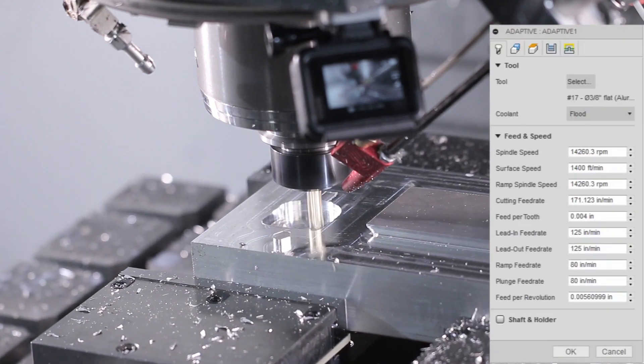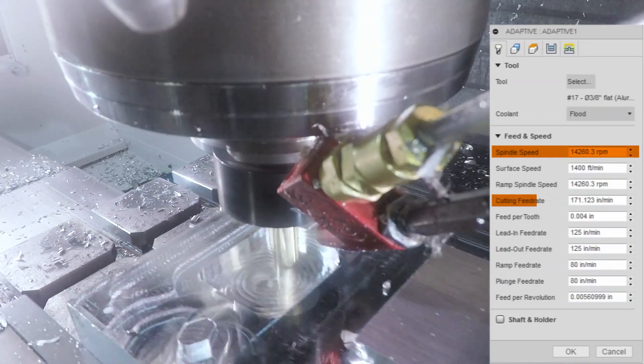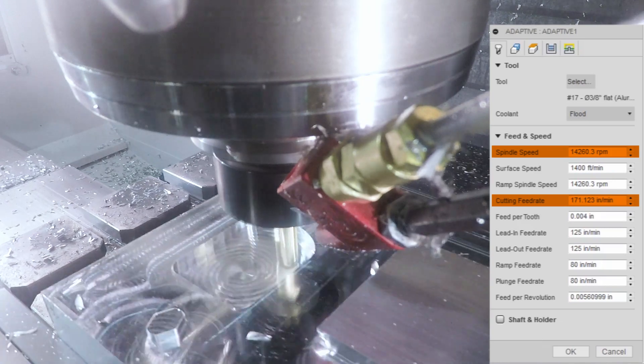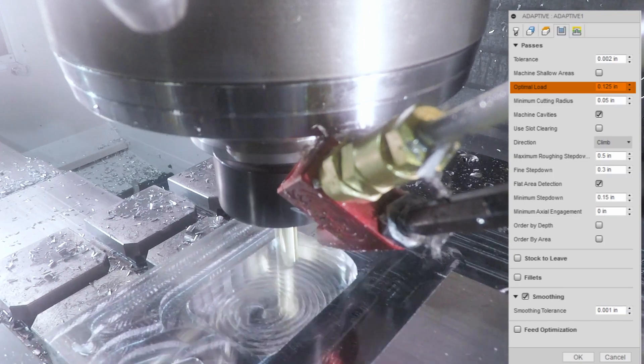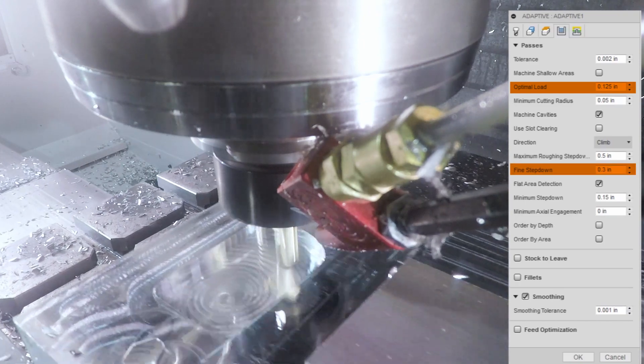1,400 surface feet, that's about 14,000 RPMs, 171 inches a minute, which is about 0.004 per tooth and a 0.125 step over. That's pretty good, 33% step over. Turned out great.